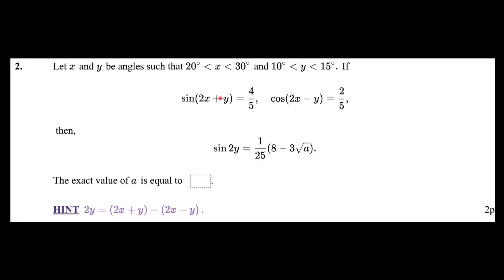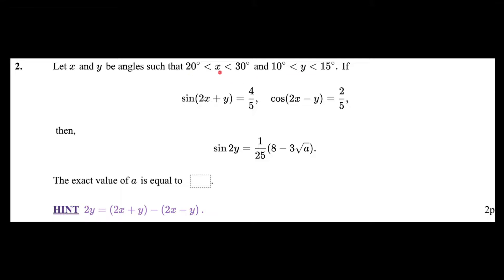So we go to the next problem. This one is a little bit hard, but I have given you a hint. Let me read the problem: let x and y be angles such that x is between 20 and 30 degrees and y is between 10 and 15 degrees. If sine of 2x+y is 4 over 5 and cosine of 2x−y is 2 over 5, then sine 2y equals 1 over 25 times 8 minus 3 square root of a. The exact value of a is what?